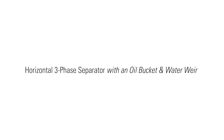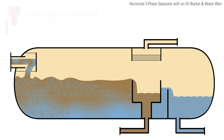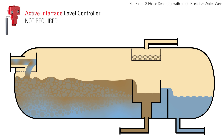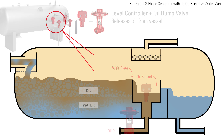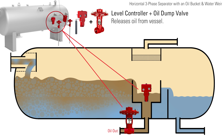In a horizontal three-phase separator with an oil bucket and water weir, the vessel does not require an active interface controller. As the oil separates on top of the water, it spills over the weir plate and into the oil bucket. The oil level in the bucket is controlled by a level controller sending a signal to the oil dump valve.